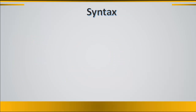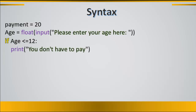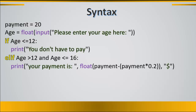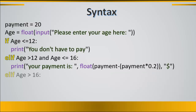The syntax of the restaurant software is as follows: first, define the payment variable as 20. Then ask the user for their age and convert it to float. Write the first condition: if age is less than or equal to 12, print 'you don't have to pay'. The next condition: elif age is greater than 12 and less than or equal to 16, print the payment as payment minus (payment multiplied by 0.2), applying the 20% discount. The last condition: if age is greater than 16, the payment is $20.